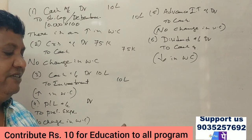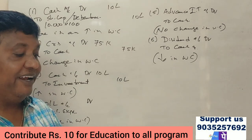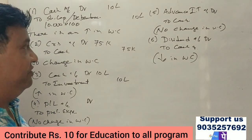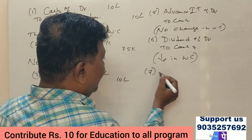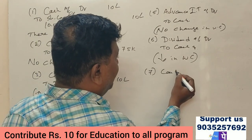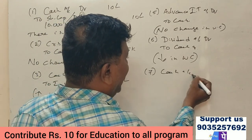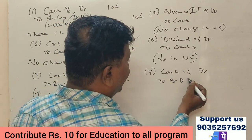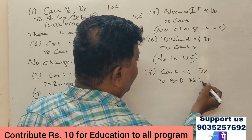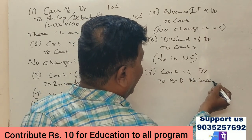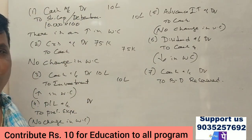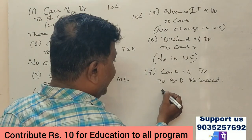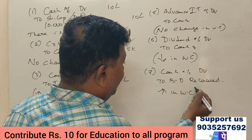Seventh question: Bad debts written off during the year, recovered ₹1,000. Journal entry: Cash account debit to bad debts recovered. Cash increases, which is a current asset, so this results in an increase in working capital.